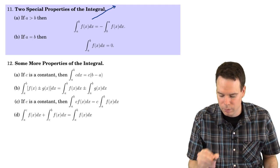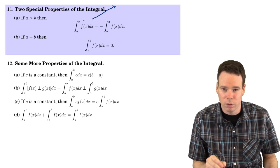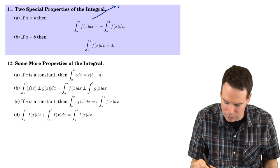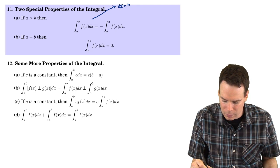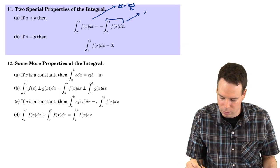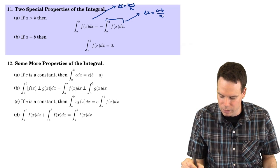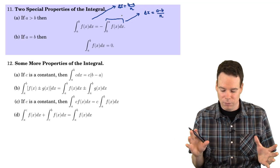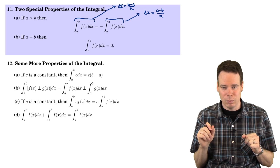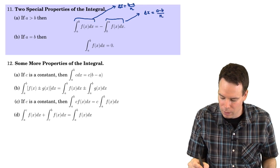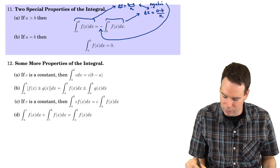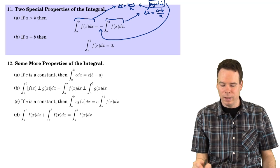Why is that? It's actually not so hard to see. Remember that this integral is a limit of a sum — the function values at the sample points times delta x. Delta x in this case would be b minus a over n. For the switched integral, delta x would be a minus b over n. That's really the only difference between these two integrals. When we work out the limit of a Riemann sum, the delta x's are negatives of each other, and that explains where the negative sign comes from.